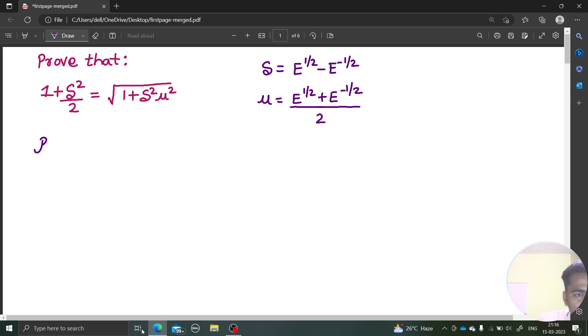Let's start off with RHS. RHS is your under root 1 plus delta square mu square.